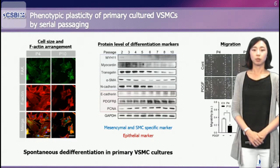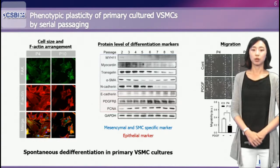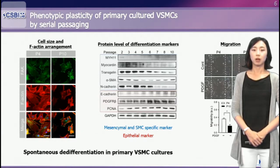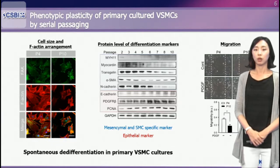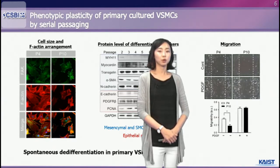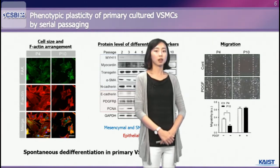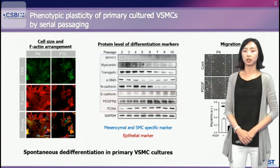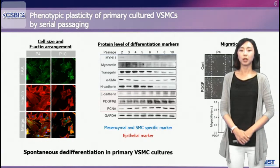In contrast, epithelial marker proteins such as E-cadherin, PDGF receptor beta, and PCNA were upregulated in later passage cultures. I will mark the mesenchymal and SMC-specific markers with a blue box and the epithelial markers with a red box here and after. To determine whether these alterations in cell size, actin rearrangement, and protein expression lead to functional changes, we determined the migration capability of VSMCs at passage 4 and 10. VSMCs at passage 4 showed better migration capability than those at the later passage. These results indicate that primary cultured VSMCs undergo spontaneous de-differentiation in a passage-dependent manner, and that this phenotypic transition results in functional alteration such as enhanced migratory activity.